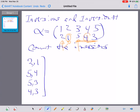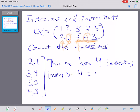So this particular permutation has 4 inversions. And hence, its inversion number is equal to 4.